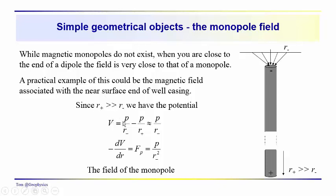And if we calculate the potential, we have the potential over the distance to the negative pole minus the pole strength over the distance to the positive pole. Remember, the field lines are coming upward from the positive pole. And by definition, those are negative, so we have a negative sign here. This term is negligible because R is so large, so we end up with a potential equal to P over R minus.